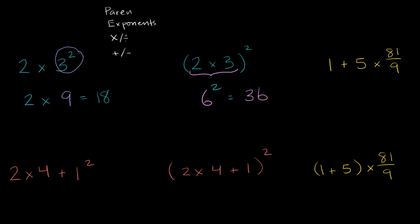Now let's think about this one right over here. Once again, we want to do our multiplication and our division first. So we have a division right over here. 81 over 9 is the same thing as 81 divided by 9. That's going to be 9.